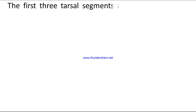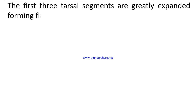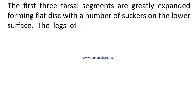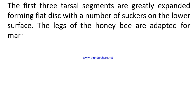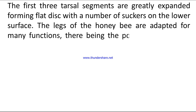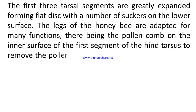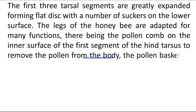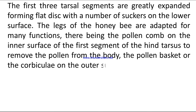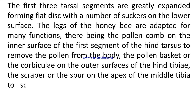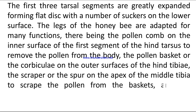The first three tarsal segments of male Dytiscus are greatly expanded, forming flat discs with a number of suckers on the lower surface. The legs of the honeybee are adapted for many functions: there is a pollen comb on the inner surface of the first segment of the hind tarsus to remove pollen from the body, a pollen basket or corbicule on the outer surface of the hind tibia, and a scraper or spur at the apex of the middle tibia to scrape pollen from the baskets.